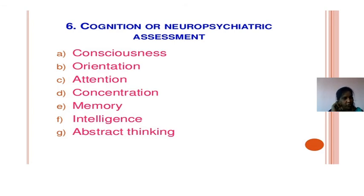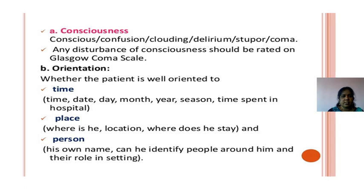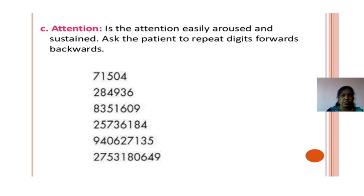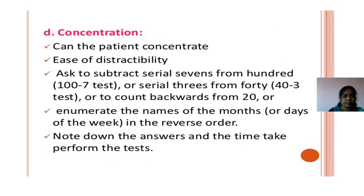Cognition or neuropsychiatric assessment: we assess consciousness, orientation, attention, concentration, memory, intelligence, and abstract thinking. Consciousness: whether there is confusion, clouding of mind, delirium, stupor, or coma — recorded on the Glasgow Coma Scale. Orientation: to time, place, and person. Attention: we ask the patient to repeat numbers or digits, forward or backward. Concentration: we ask arithmetic such as '100 minus 7' or '40 minus 3,' or count backward from 20 to 1.